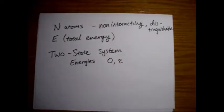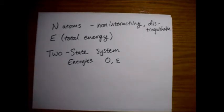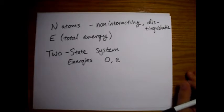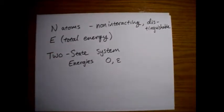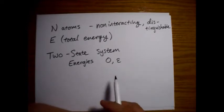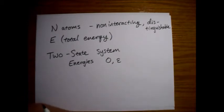Alright, so suppose we have a system of N atoms, they're non-interacting, they don't even move, they're distinguishable, so they're like sitting on a lattice or something. So you can tell one apart from the other. And we give them a total energy of big E. And let's say we have a two-state system, so there's only two energies that they can be in, zero, which we call zero, and epsilon.